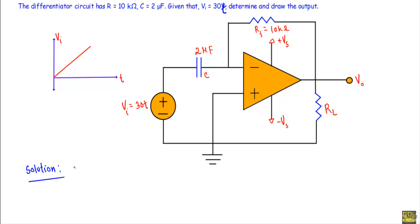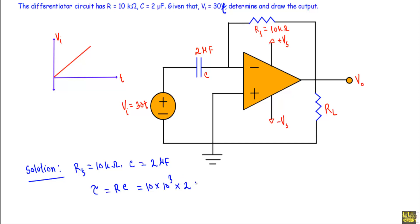In the circuit, the feedback resistance Rf is equal to 10 kilo-ohm and the capacitor C has a magnitude of 2 micro-farad. Therefore, the time constant of this differentiator circuit, tau, will be equal to R times C, which equals 10×10³ times 2×10⁻⁶, giving 20 milliseconds.